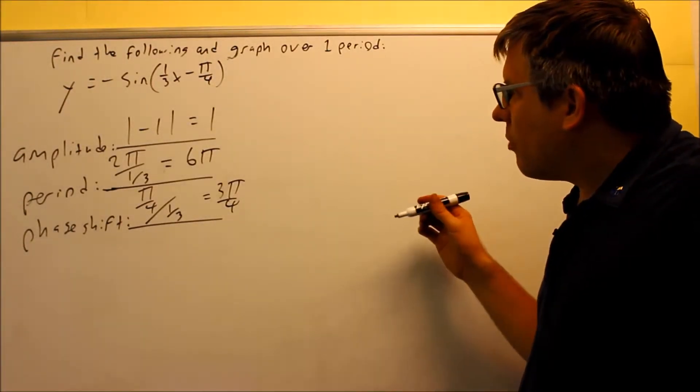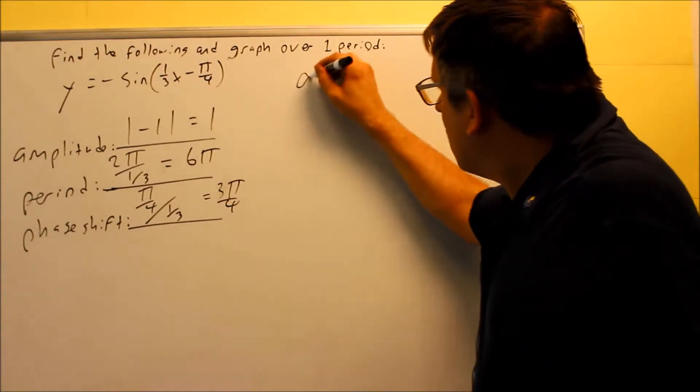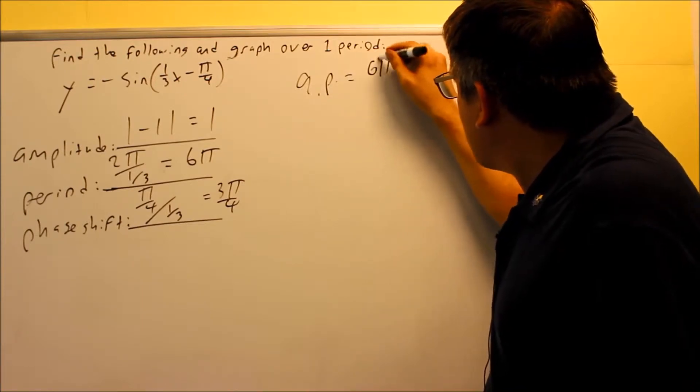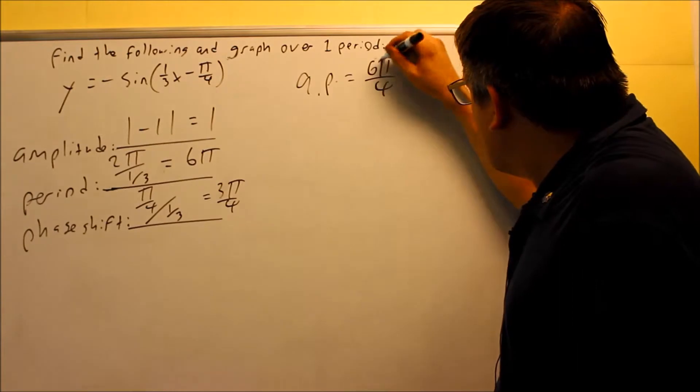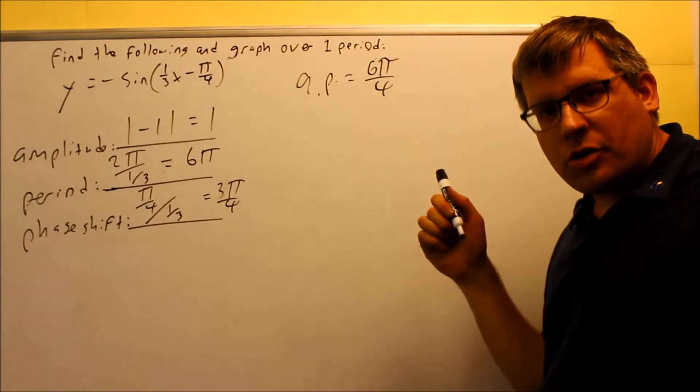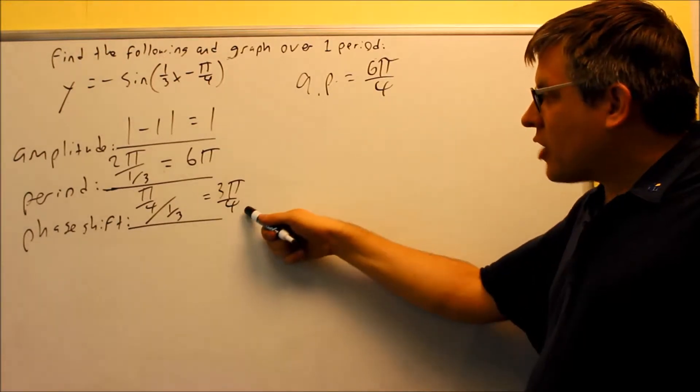I need to find out what my quarter points are so I can figure out my other key points. So the quarter point is your period, which is 6π, and we're going to divide that by 4. Now, this can be reduced, but I don't want to reduce that because I noticed that I already have the same denominator as my phase shift.